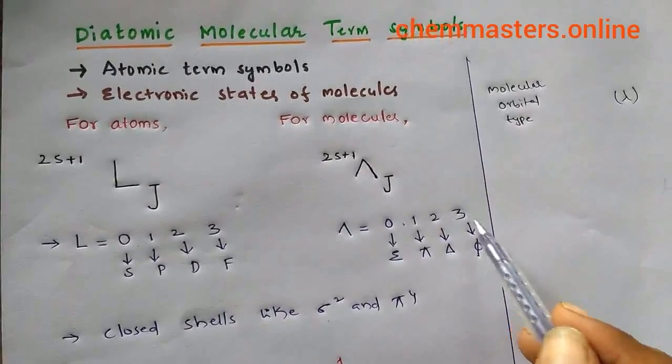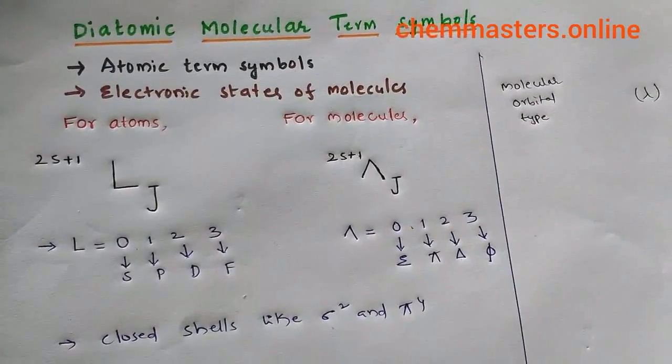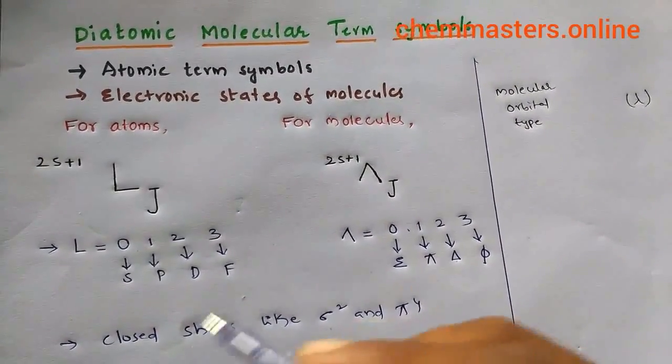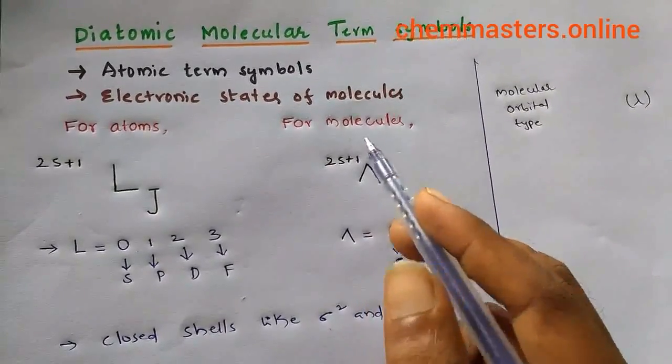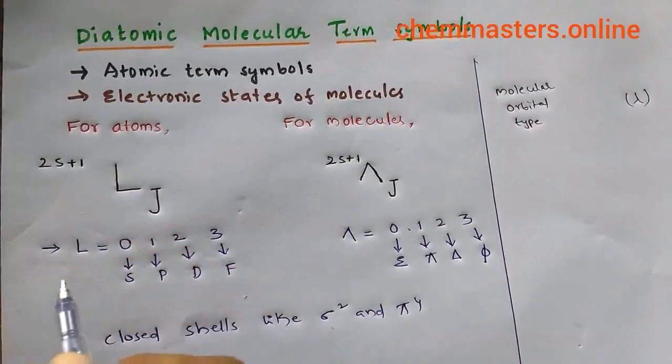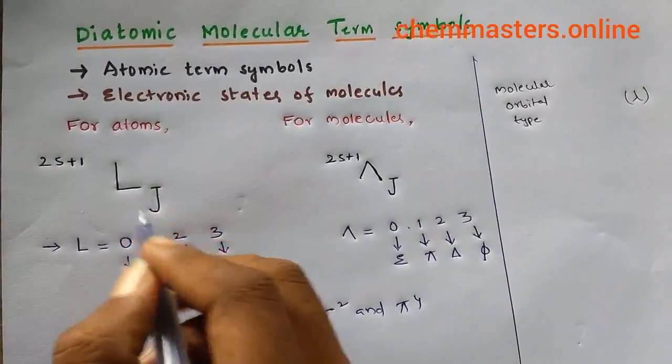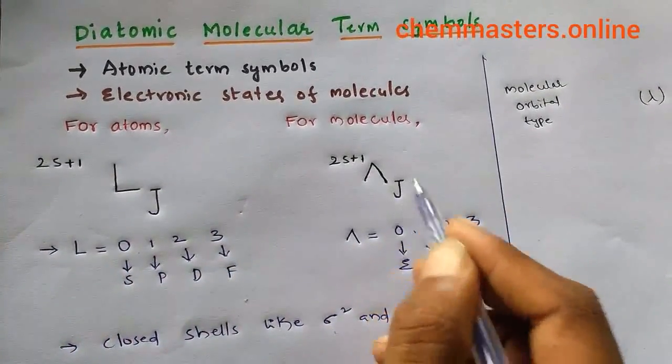If you check molecular term symbols with atomic term symbols, in atomic term symbols we have J, but in molecular term symbols J is not considered. Instead, we consider gerade or ungerade parity.